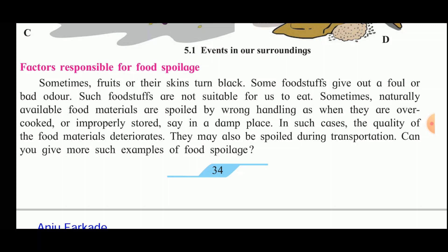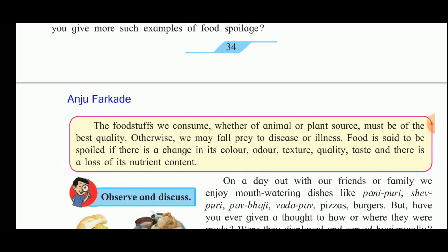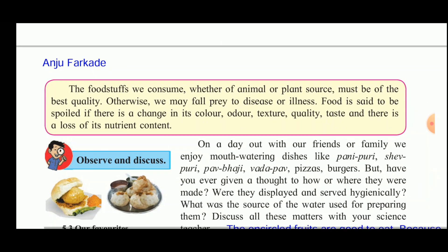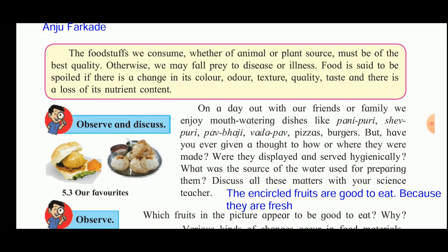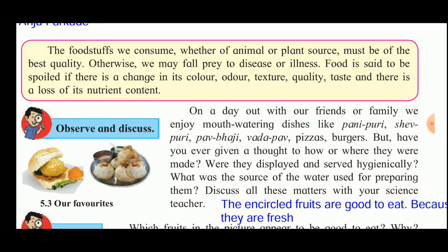For example, if a large quantity of food is prepared at weddings or functions and kept uncovered or outside the refrigerator for a long time, the food gets spoiled. Vegetables, milk, and butter should be kept in a refrigerator to keep them in good condition for longer. The foodstuffs we consume — whether from a plant or animal source — must be of best quality, otherwise we may fall prey to disease or illness, which we call food poisoning.